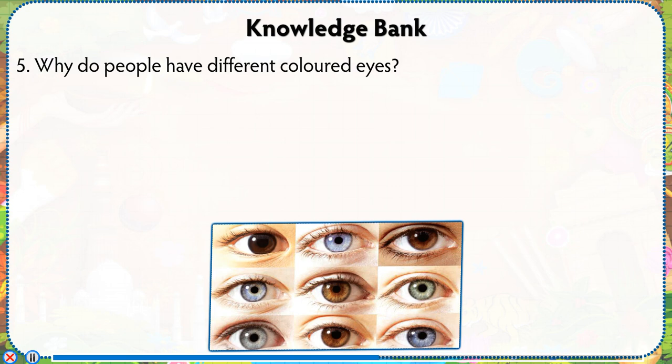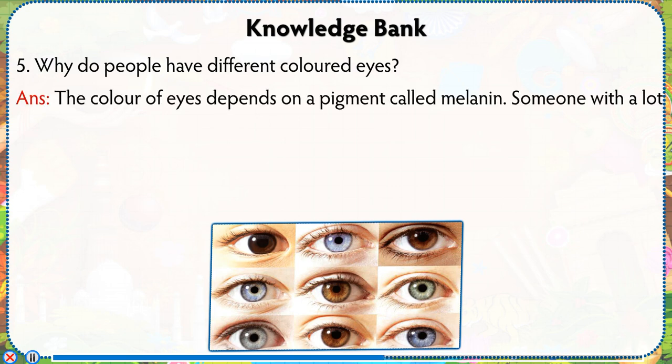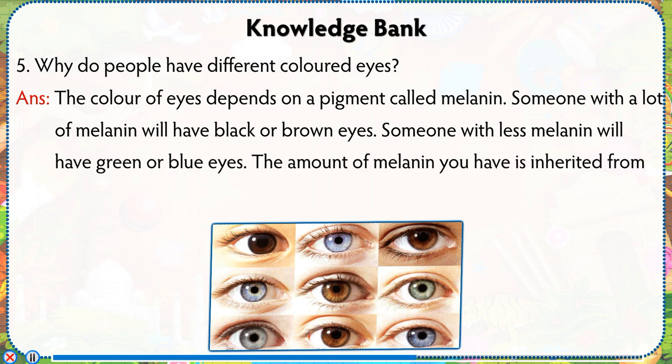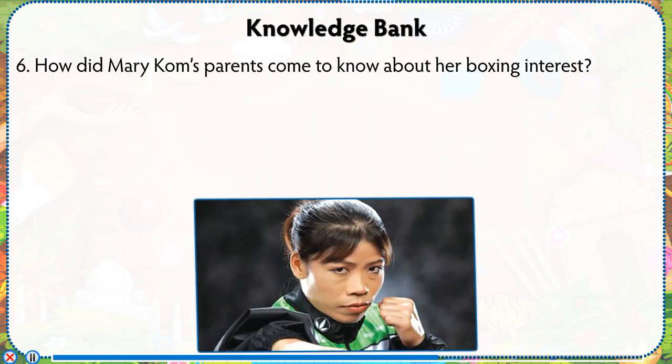Number 5: Why do people have different colored eyes? Answer: The color of eyes depends on a pigment called melanin. Someone with a lot of melanin will have black or brown eyes. Someone with less melanin will have green or blue eyes. The amount of melanin you have is inherited from your parents or family.